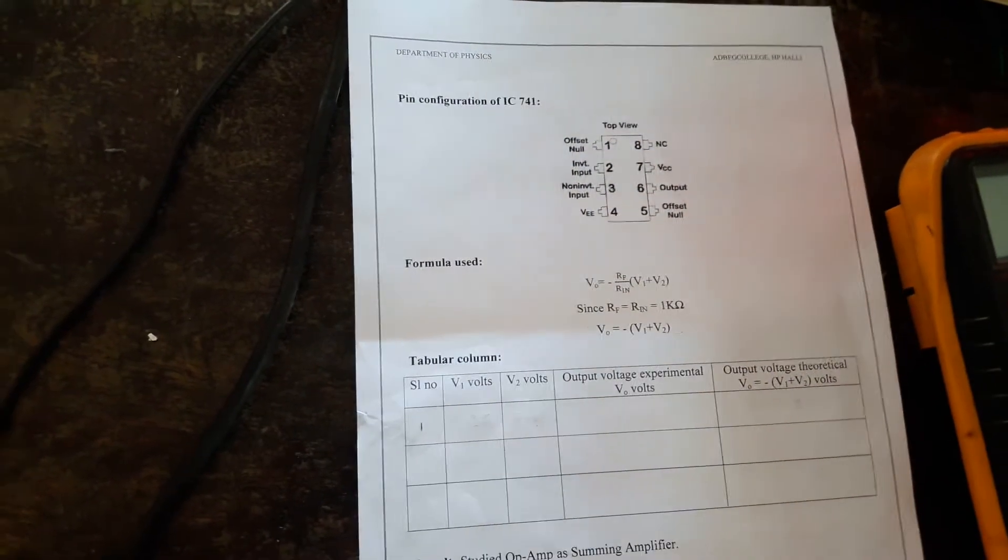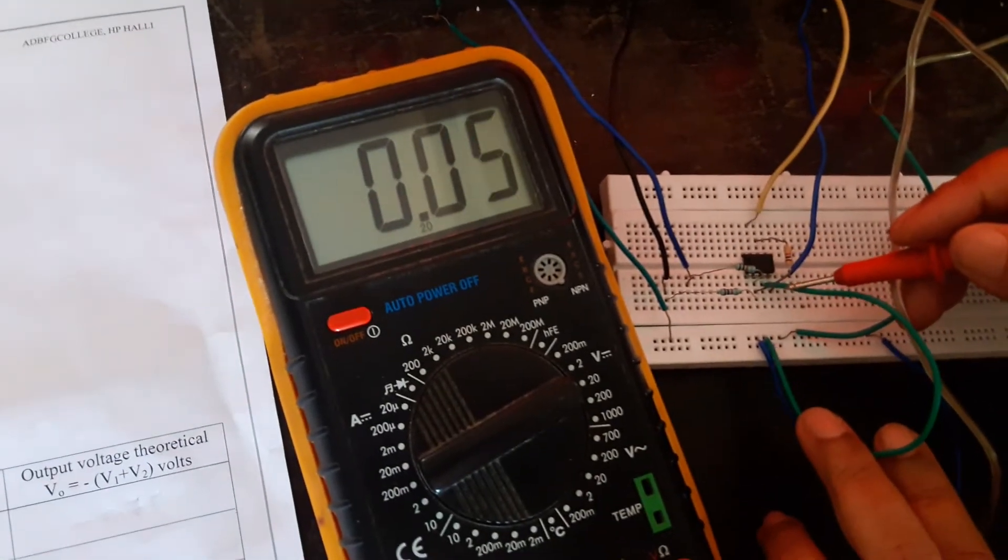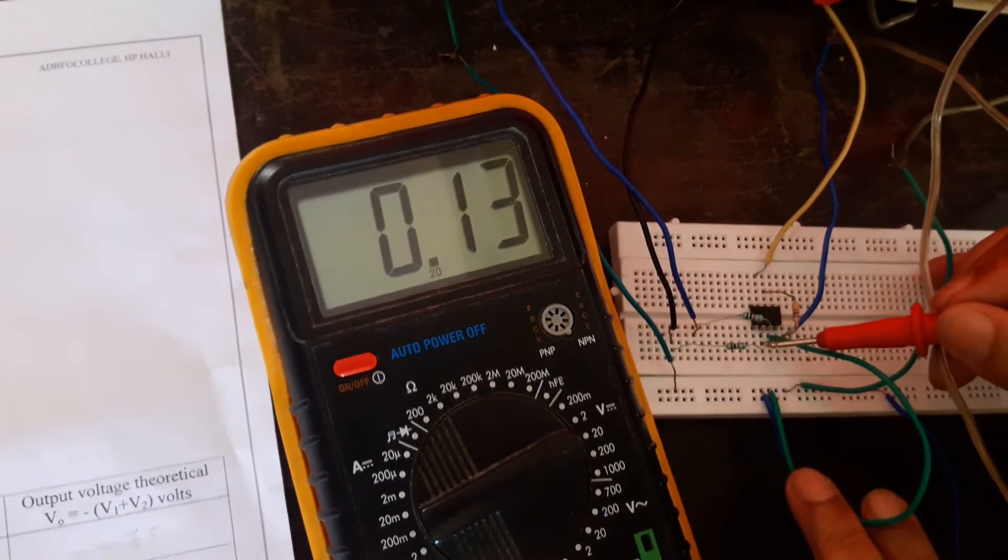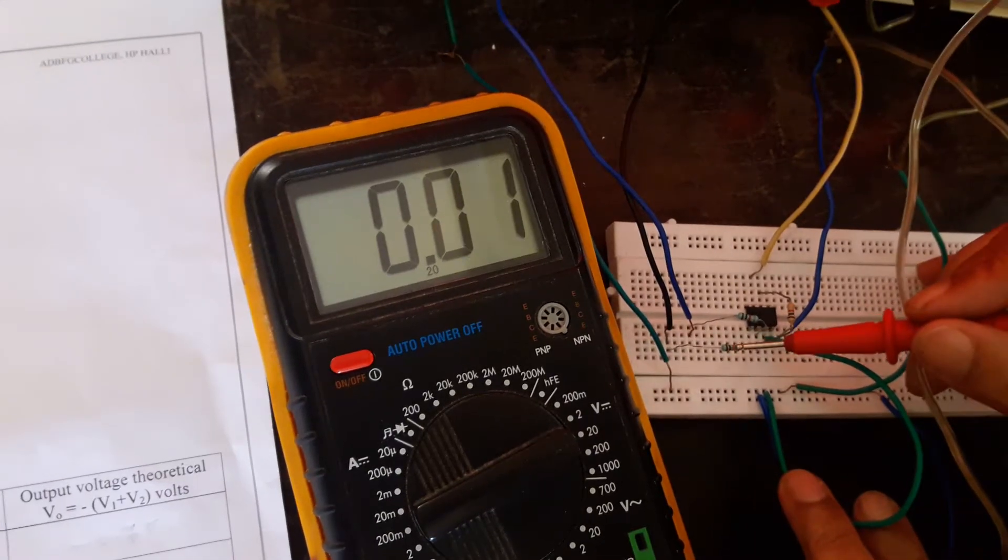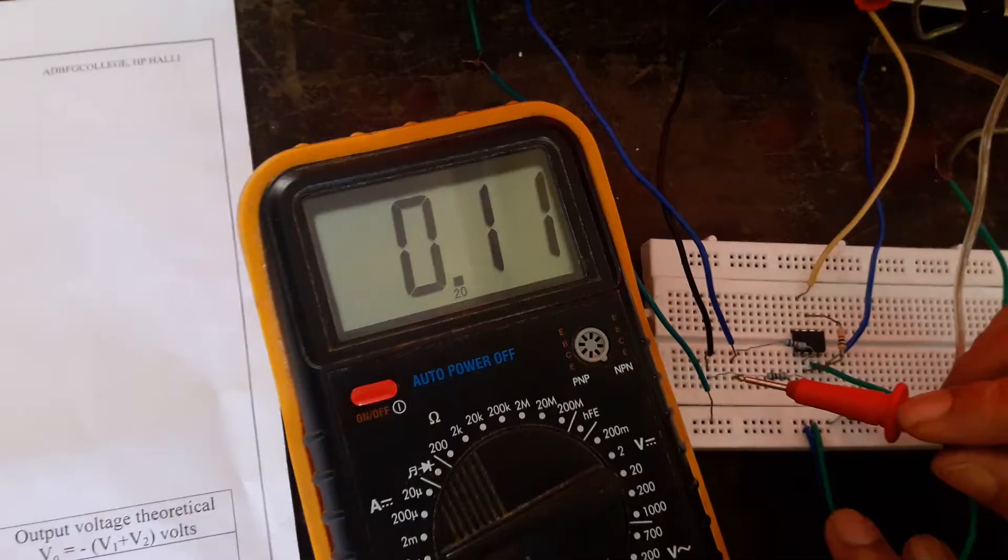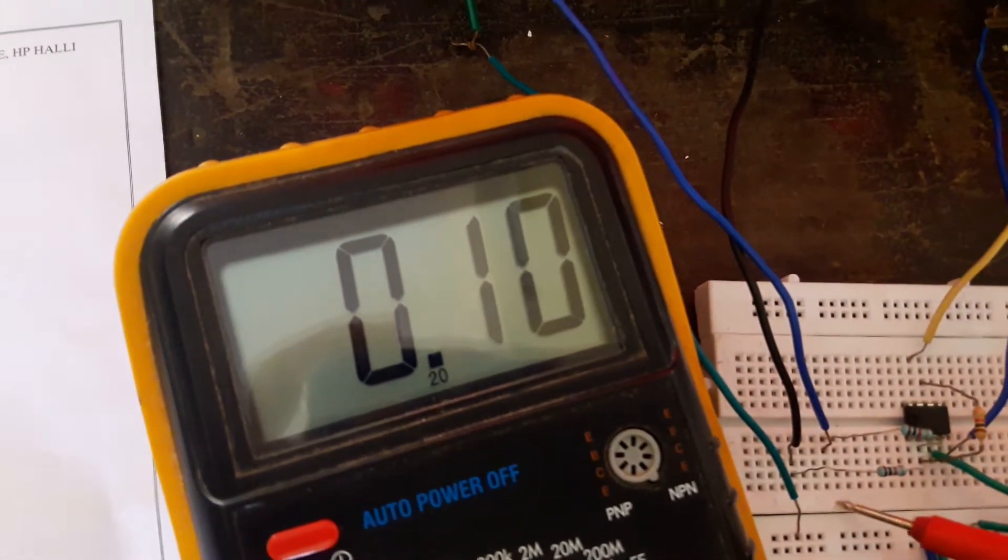Here are the connections I have made in accordance with the circuit diagram. Pin 3 is grounded. Pin 2 is given to resistance 1 kilo ohm. Pin 2 again is given to another resistance 1 kilo ohm. You should observe both should not be given at the same point. They must be given in different lines.